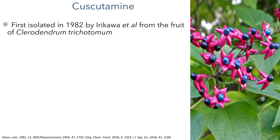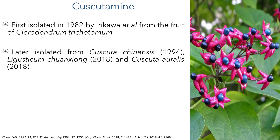Cuscutamine was first isolated in 1982 by Iriqawa et al. from the fruit of Clarodendrum trichotomo. Since its initial isolation it has also been found in Cuscuta chanensis, Ligusticum chongqing and Cuscuta oralis.